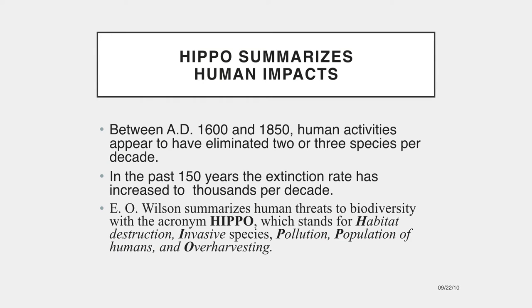The rate at which species are disappearing has increased dramatically over the past 150 years. Between AD 1600 and 1850, human activities appear to have eliminated two or three species per decade, about double the natural extinction rate. In the past 150 years, the extinction rate has increased to thousands per decade. Conservation biologists call this the sixth mass extinction, noting that this time it's not asteroids or volcanoes, but human impacts that are responsible.